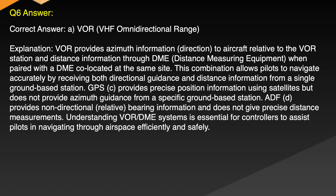This combination allows pilots to navigate accurately by receiving both directional guidance and distance information from a single ground-based station. GPS provides precise position information using satellites but does not provide azimuth guidance from a specific ground-based station. ADF provides non-directional relative bearing information and does not give precise distance measurements. Understanding VOR/DME systems is essential for controllers to assist pilots in navigating through airspace efficiently and safely.